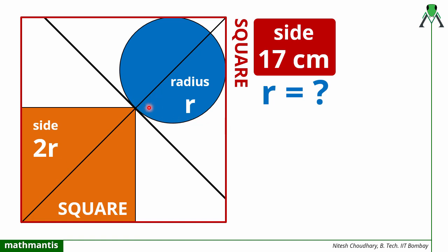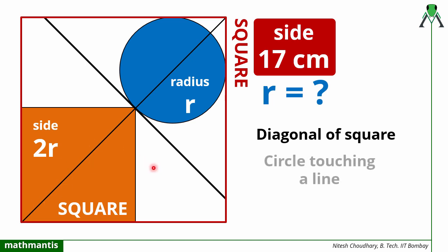To solve this question I will use two things. First is the diagonal of the square. If you notice, the diagonal of the red square is the same line as the diagonal of the orange square — the lengths will be different, but we have defined the diagonal of two squares here. The second property I will use is that of a circle touching a line. This circle is touching three lines: this line, this line, and this line.